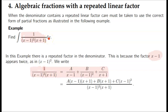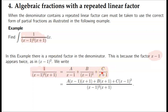If we have an algebraic fraction with a repeated linear factor, how do we solve it? Here the repeated factor is (x minus 1) squared, and there is also (x plus 1). The way we do it is we write: A over (x minus 1), plus B over (x minus 1) squared, plus C over (x plus 1). Then we convert into that form using a common denominator — let's do that on the next slide.